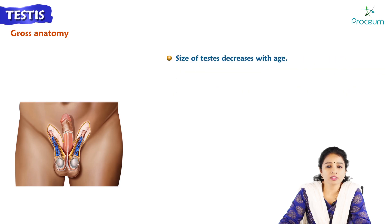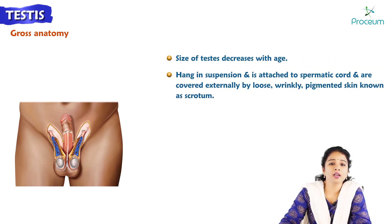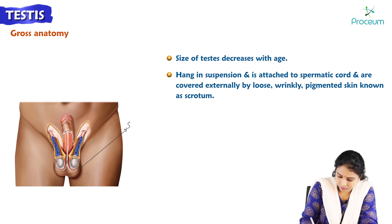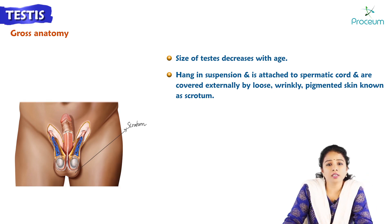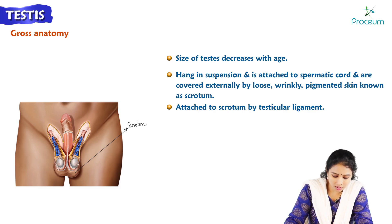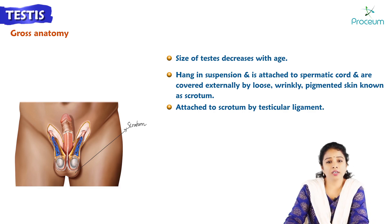The size of the testis decreases with age. The testis hangs in suspension and is attached to the spermatic cord, covered externally by the loose, wrinkly, pigmented skin known as the scrotum. The testis is attached to the inner wall of the scrotum by a ligament called the testicular ligament.